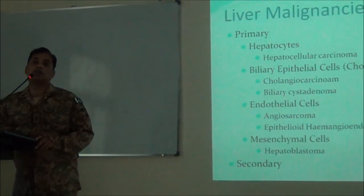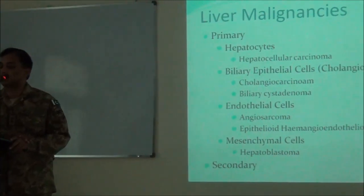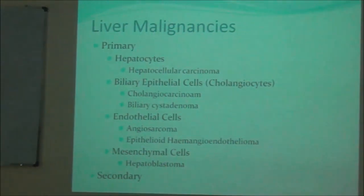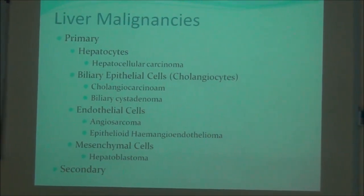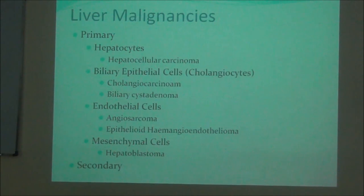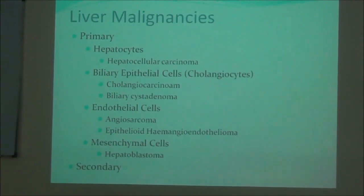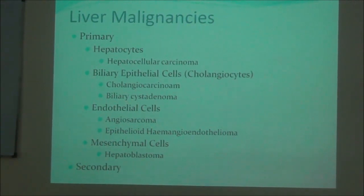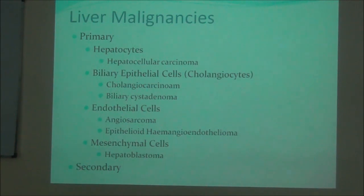The commonest type of tumor we see in the liver is secondaries from other sites. Whenever we have a suspicion of malignancy or a nodule in the liver seen on imaging, there are more chances that it would be a secondary tumor from another site rather than a primary one. But when there is a primary tumor, it is either hepatocellular carcinoma or cholangiocarcinoma in most cases.